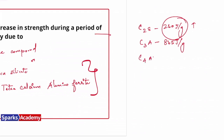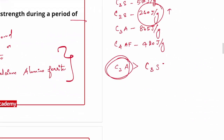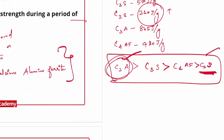The increasing order of heat of hydration is: C2S (260) < C4AF (420) < C3S (500) < C3A (865). C3A is the highest and C2S is the lowest. Questions can be asked on this order or on the values, so kindly note this. Next question: a bond consisting of header and stretcher courses.